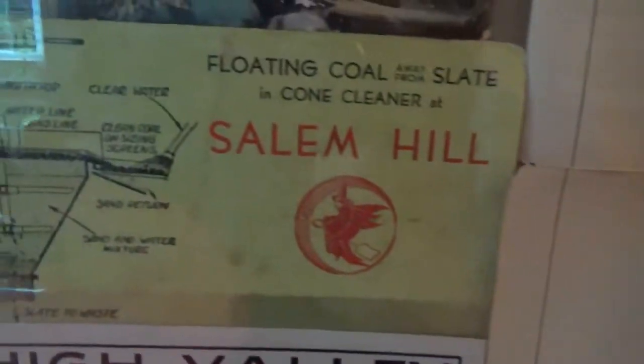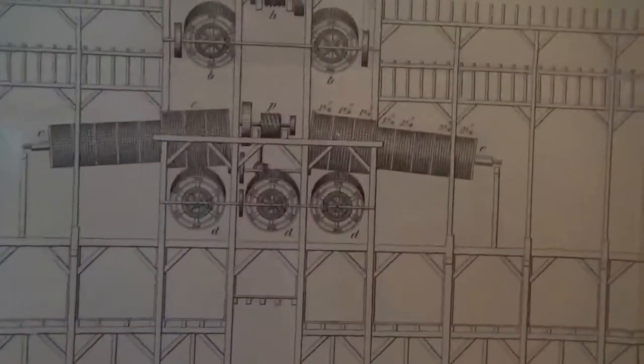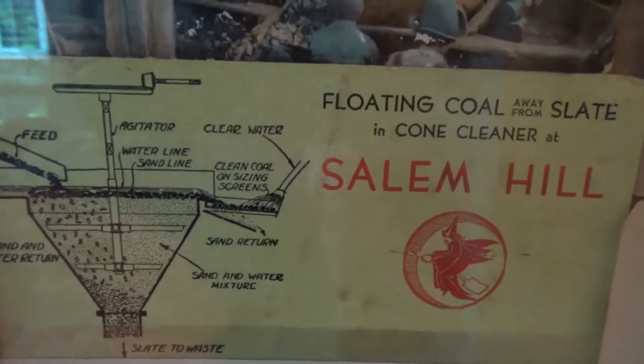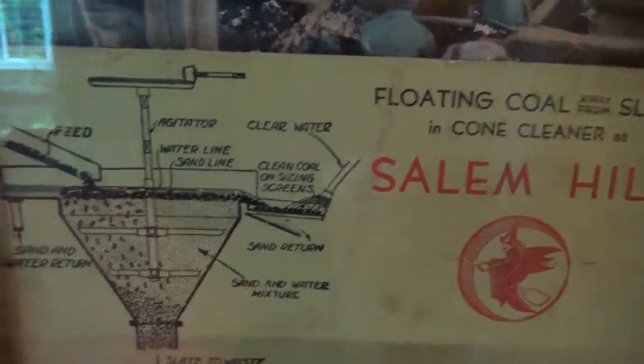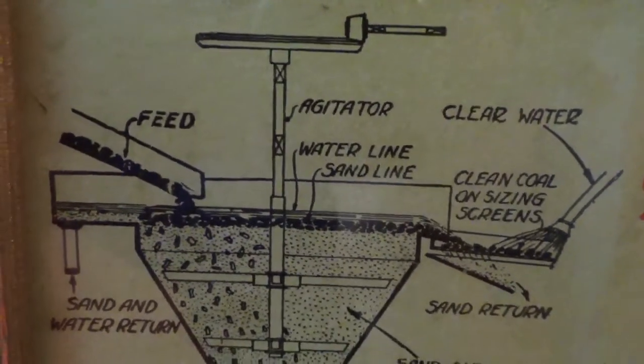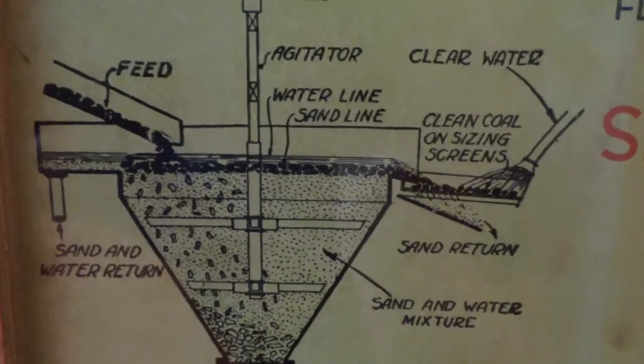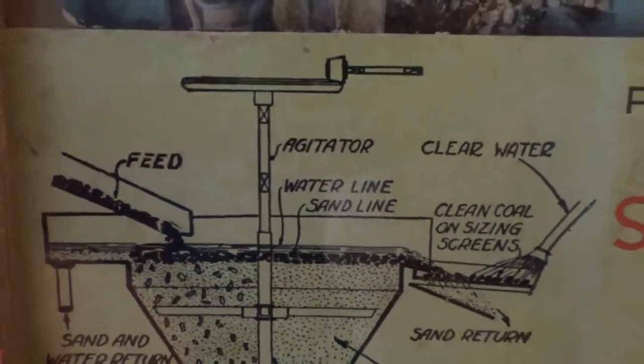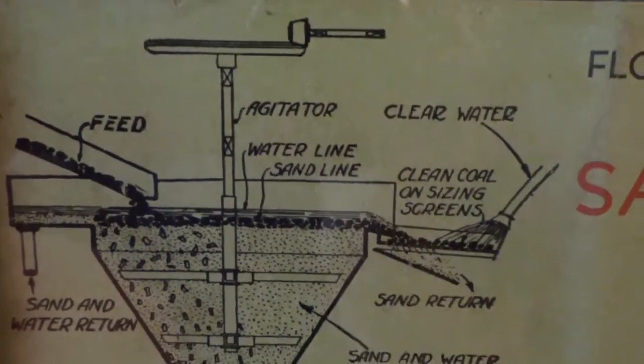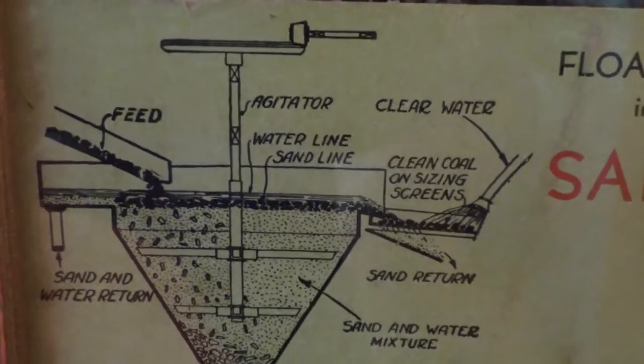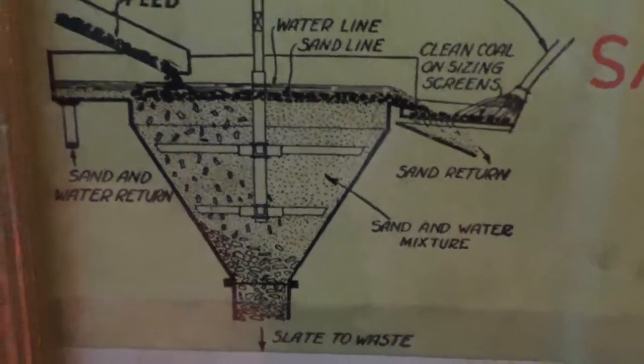This is cool—this is later technology. See, these were roller screens or whatever, like a trommel. Later on, this is the same colliery, floating coal away from slate in a cone cleaner. The processes became more advanced, such as here they're using sand, they're using heavy media. It just helped due to physics of the coal and slate and rock in relation to one another to help separate more efficiently.